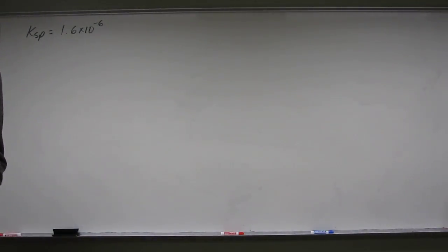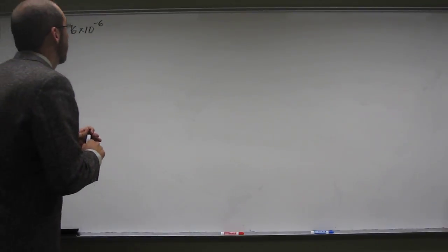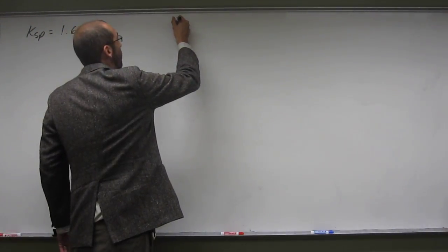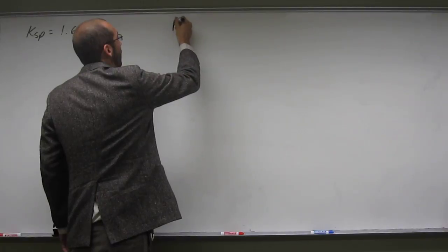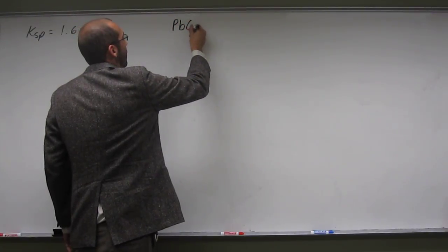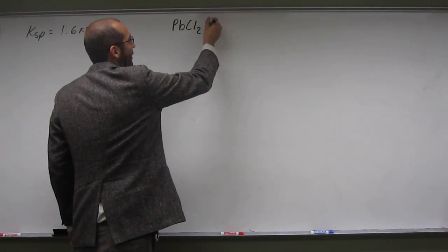So it says what is the molar solubility of lead 2 chloride with a Ksp of 1.6 times 10 to the sixth. So first thing we have to do is write the chemical equation. So lead 2 chloride, do you remember? PbCl2, very good.